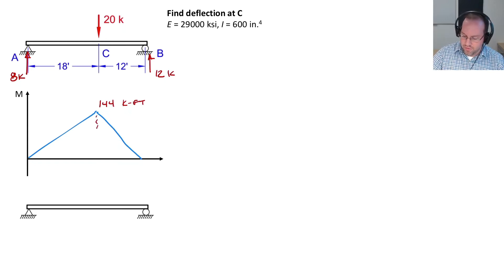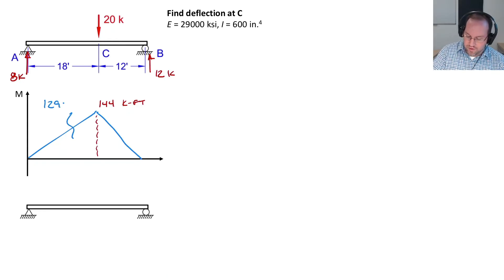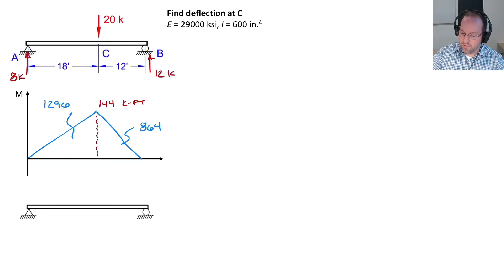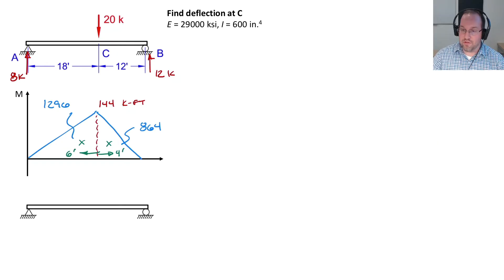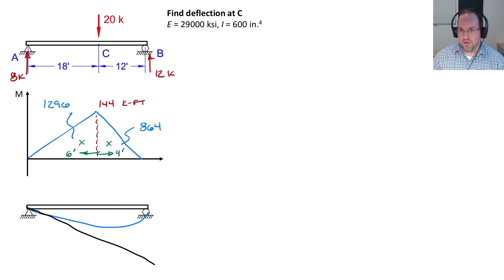Dividing this area into two separate triangles: the first triangle has an area of 1,296 (one-half base times height), and the second triangle has an area of 864. The centroids are one-third of the base distance from the vertical — four feet over for the first and six feet over for the second. Next, we draw the displaced shape for the structure, which deflects downwards. We draw a tangent at side A, then draw the deviations to the tangent needed to calculate the displacement.